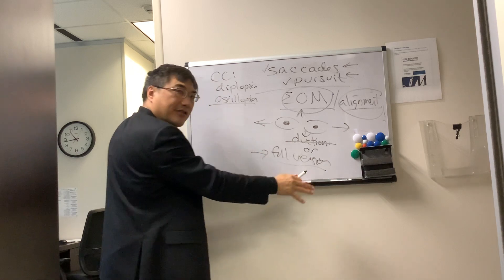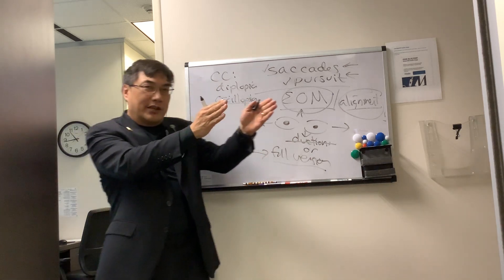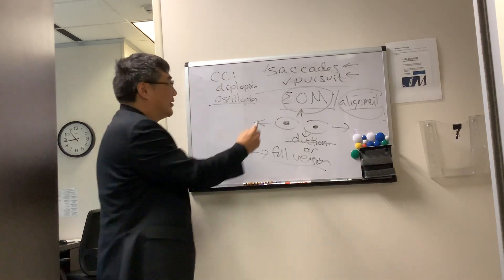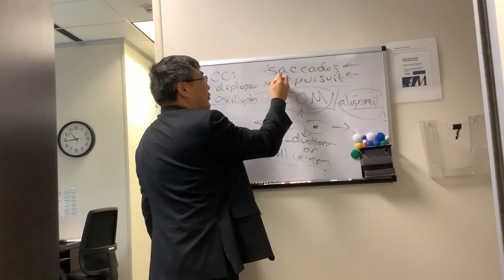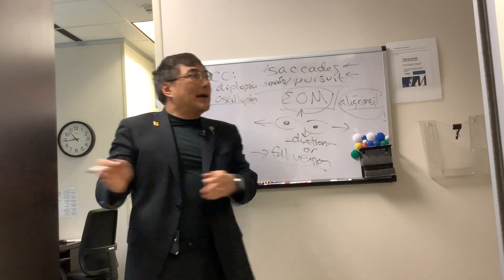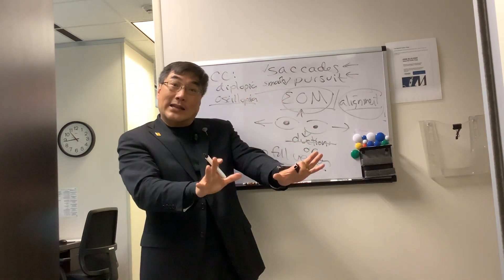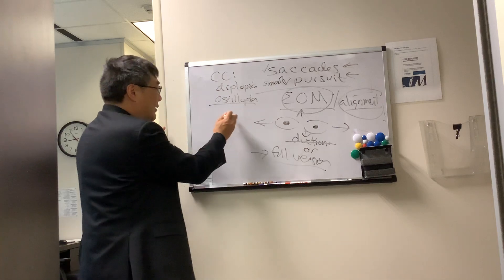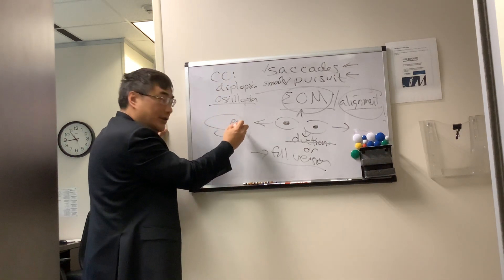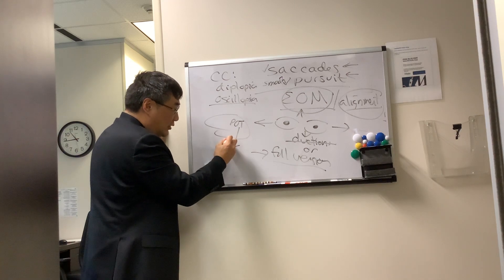You're doing the pursuit with the versions. And with the pursuit, what you're looking for is that it's smooth, smooth pursuit. We want the pursuit to be smooth. And so if the pursuit is not smooth, that means the pursuit pathway has been damaged. That pursuit pathway starts in the ipsilateral parietal occipital temporal region and transmits to the brainstem.